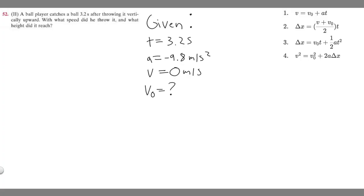And so which equation should we use to solve it? So we have all these equations. We're given V, we're given V, we're trying to find V sub 0. We have A and we have T. All these require delta X.